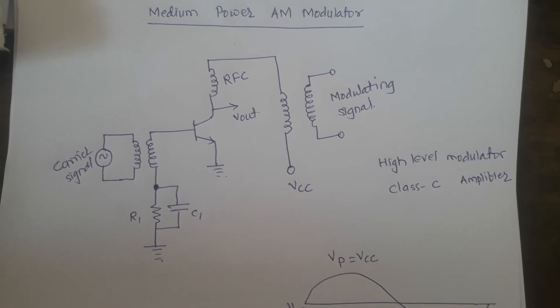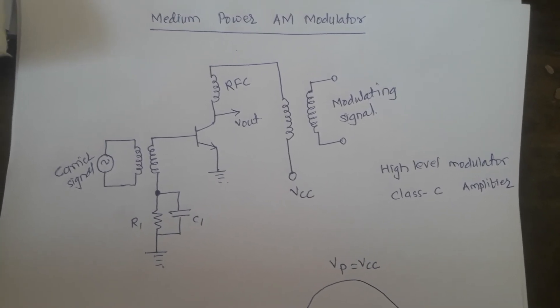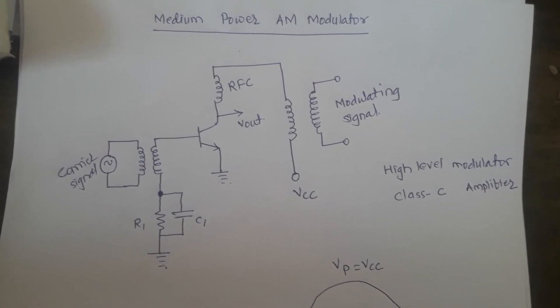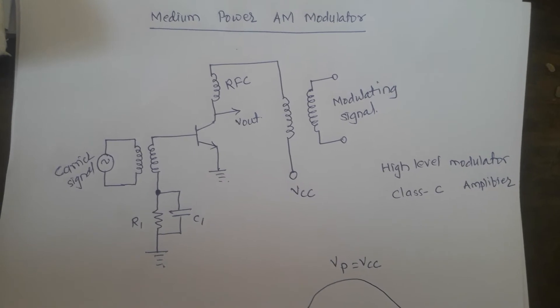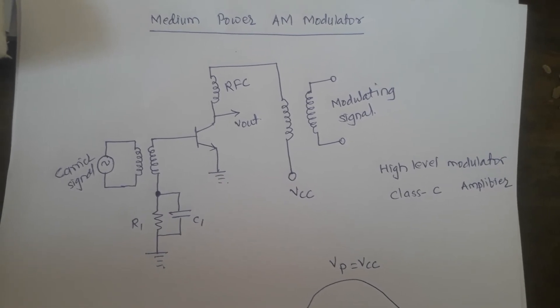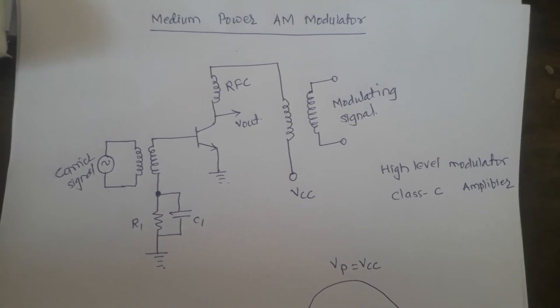The modulation or the multiplication process takes place at the collector side. So we are getting output at the collector directly. The amplitude modulated waveform we are getting at the collector side.